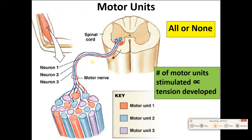We now need to define something called a motor unit. A motor unit is a single motor neuron and the muscle fibers it stimulates. I actually see three motor units here: my purple motor unit with my purple motor neuron and its purple muscle fibers, my blue motor unit with the blue motor neuron and its blue muscle fibers, and my red motor unit with the red motor neuron and its muscle fibers. Each motor unit is an all-or-none thing — if I stimulate this purple neuron, it will release acetylcholine on these purple muscle cells and they'll all contract fully.